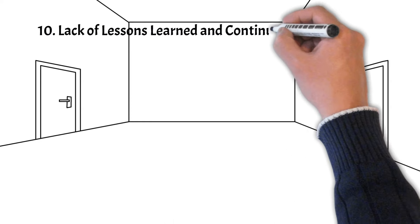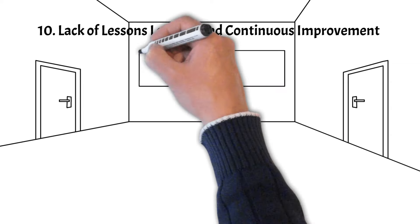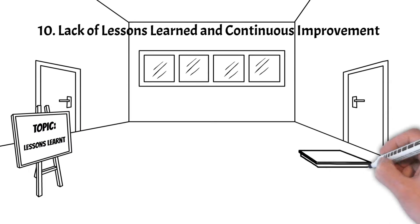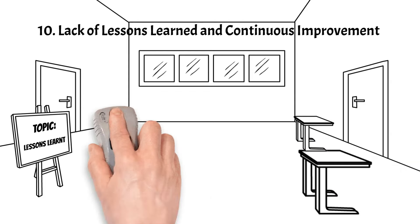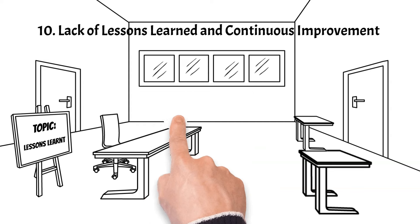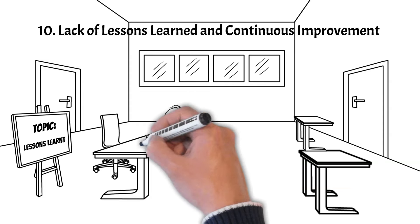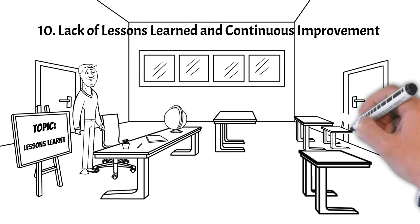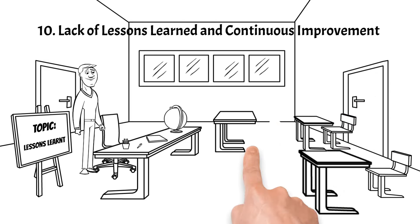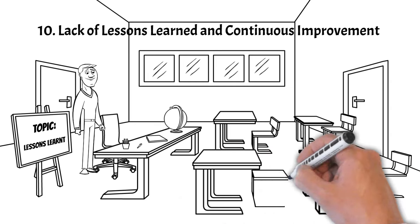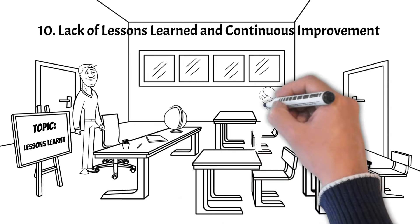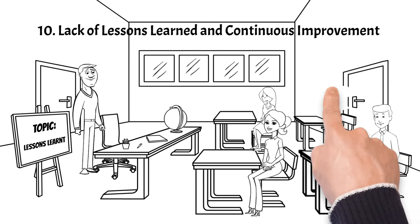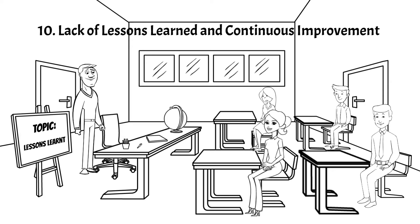Pitfall 10: Lack of lessons learned and continuous improvement. A significant pitfall that many projects encounter is the lack of emphasis on lessons learned and continuous improvement. After completing a project, it's crucial to assess its successes and failures objectively. Not taking the time to evaluate what worked well and what could be improved means missing out on valuable insights for future projects. By neglecting to incorporate lessons learned, teams may end up repeating the same mistakes. Embracing a culture of open, constructive feedback and continuous improvement empowers teams to evolve, adapt, and enhance their project management practices for even greater future success.